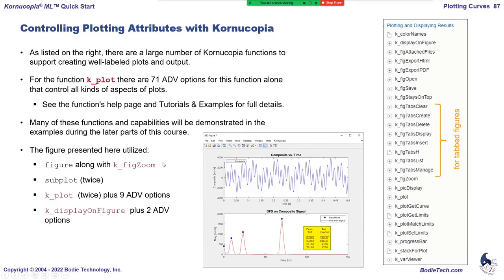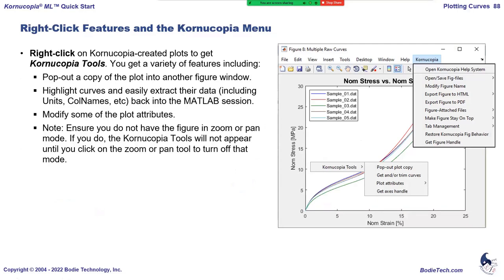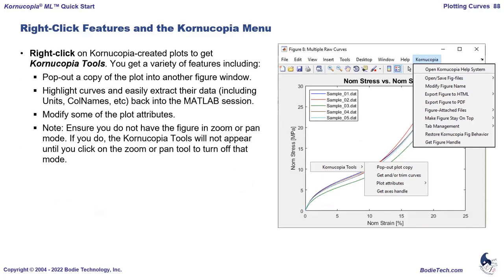Once you've made a plot, you can right-click on it in Cornucopia — if it was made with k-plot — to access helpful tools. Right-clicking lets you pop out a copy of the plot, which is useful when subplots get small or when you want to pull plots from two different tabs and compare them side by side. You can highlight curves and even right-click to bring data back into the workspace. You can also modify attributes like grids and axis scale. To access Cornucopia right-click tools, make sure you are not in zoom or pan mode — just click out of those modes first.